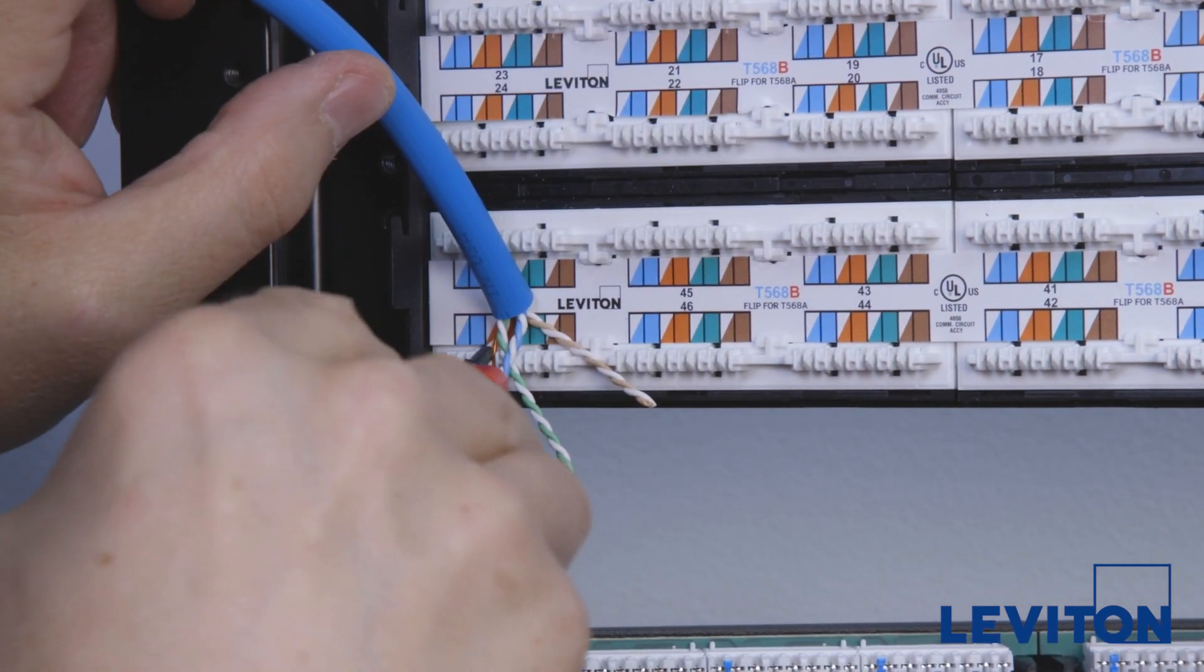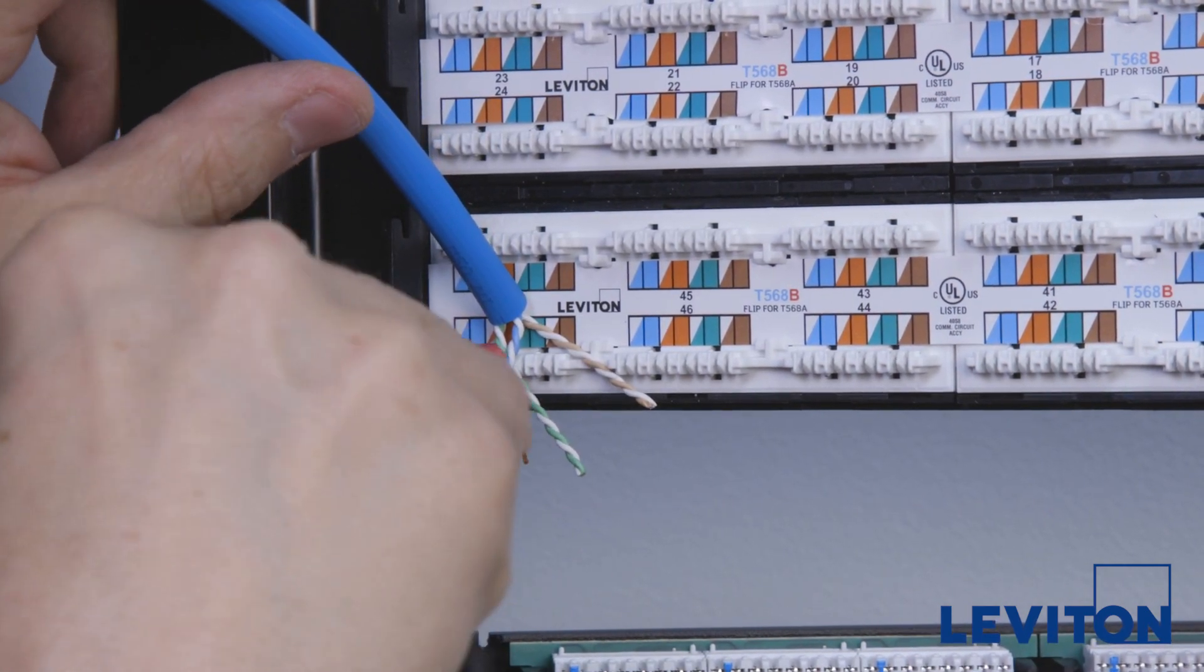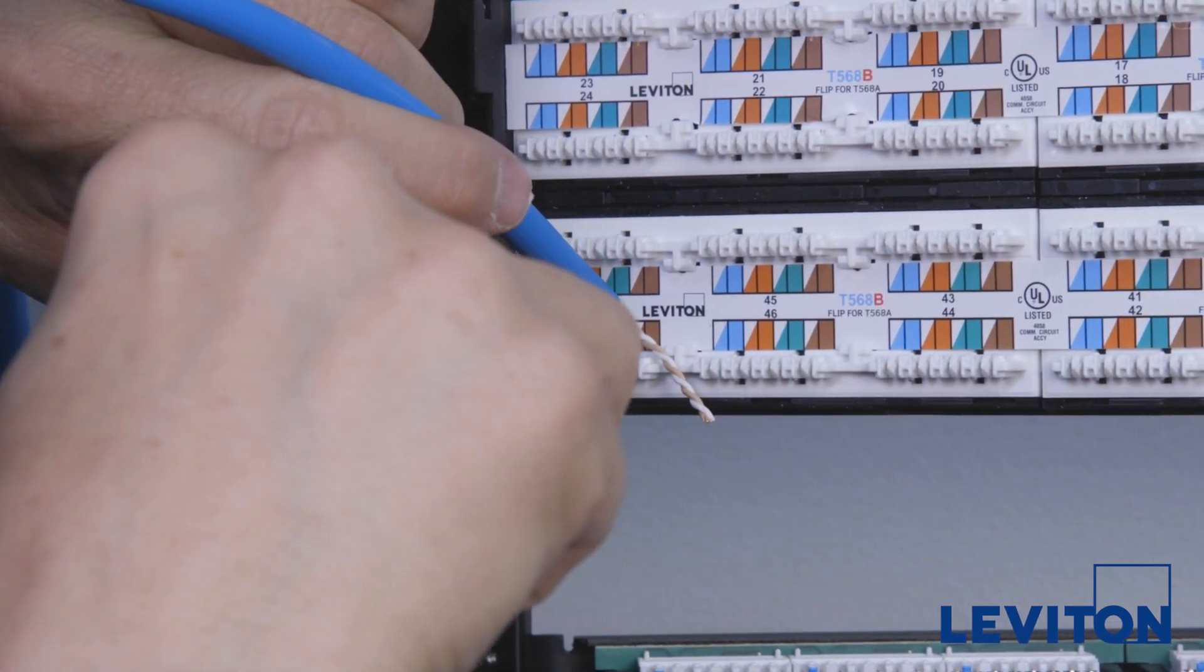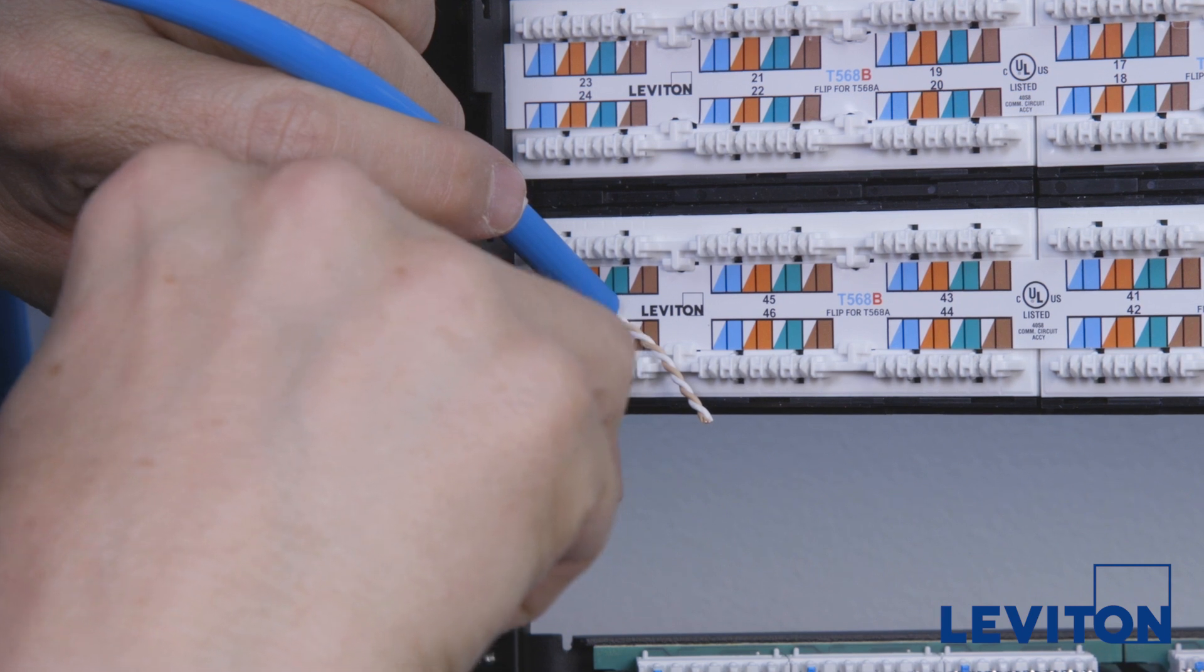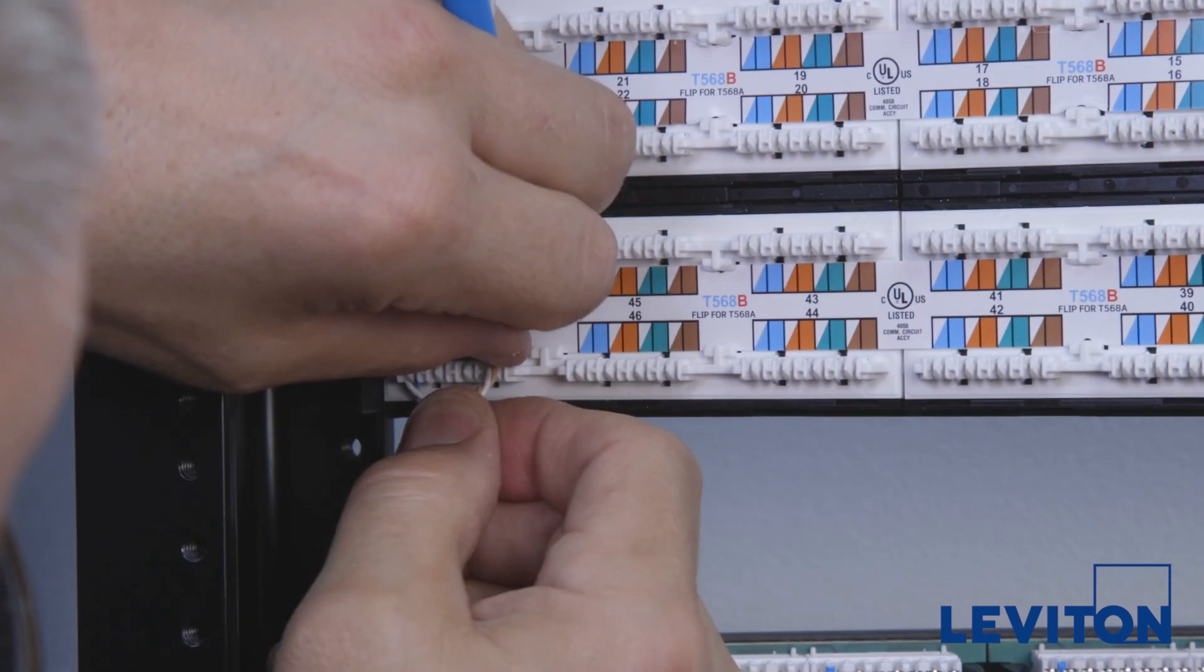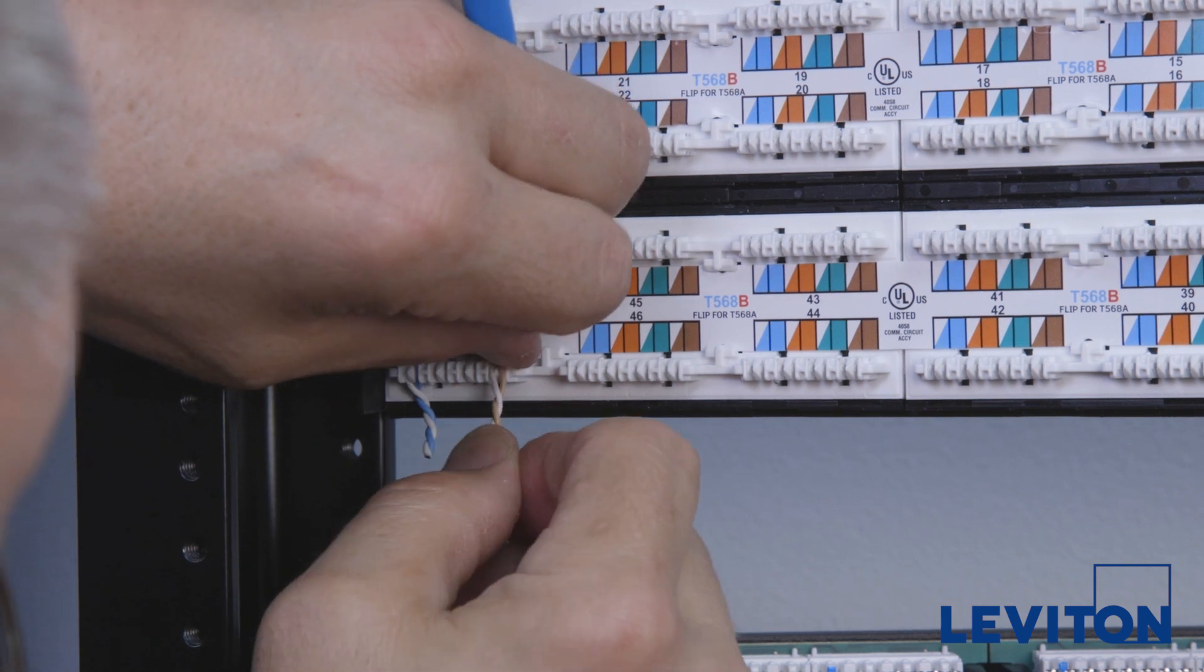Once correctly seated, punch down the pairs using a punch tool set to the low impact setting. Remember that the cut side of the punch tool must face down so that the excess end of the wire below the IDC is cut, rather than inside toward the cable jacket.